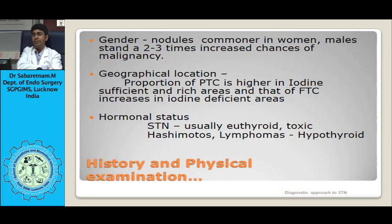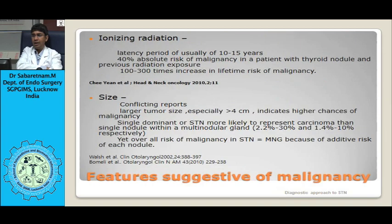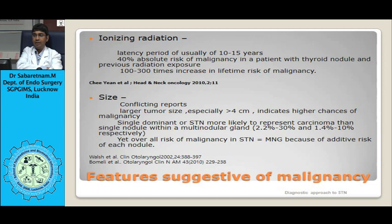Regarding ionizing radiation: if a patient has received ionizing radiation, then after a latency period of usually 10 to 15 years there is a chance of developing malignancy. Tumors larger than 4 centimeters have a higher incidence of malignancy; tumors less than 4 centimeters have less. Family history of thyroid cancers — if present in a patient with solitary thyroid nodule — increases the risk of malignancy.